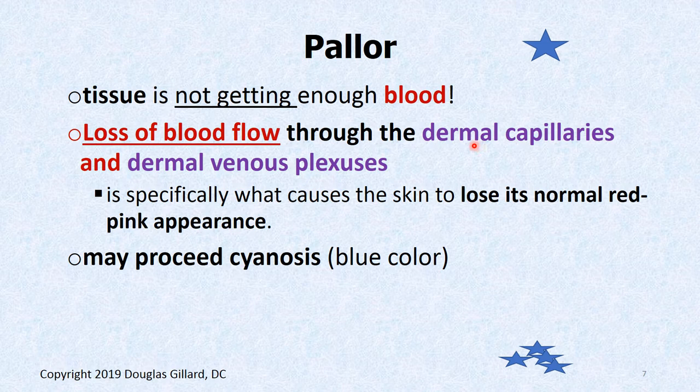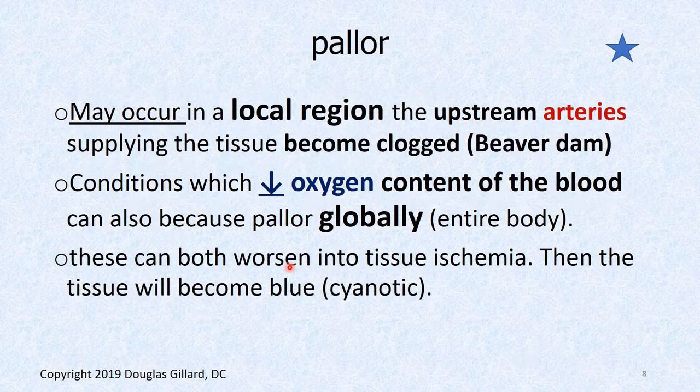There's a dermal capillary system and a dural venous plexus — that's what drains the dermis. If the tissue becomes really ischemic, it starts to turn purple, and that's a dangerous sign that you're killing the tissue. It could occur in local regions where there's an upstream artery supplying a clog — a beaver dam somewhere upstream. If it's in your popliteal artery, for instance, you might have decreased blood flow down into your foot, and your leg and foot start to look white.